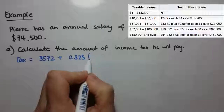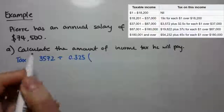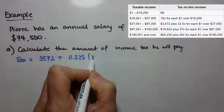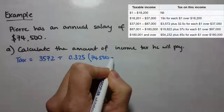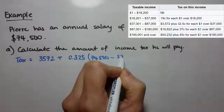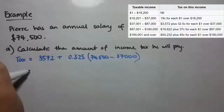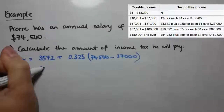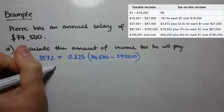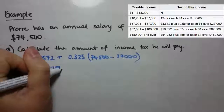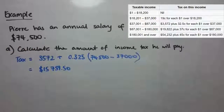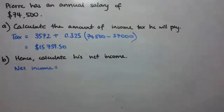To work out the number of dollars he's making over $37,000, we just take his salary and subtract $37,000. If you put that all into your calculator, you get that Pierre pays $15,759.50 in income tax.